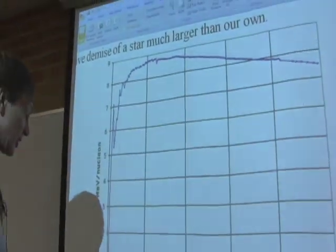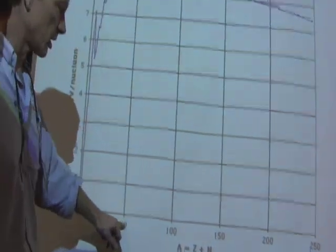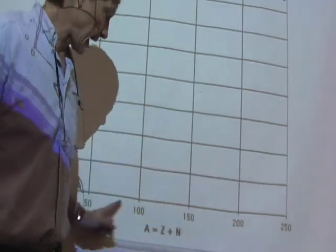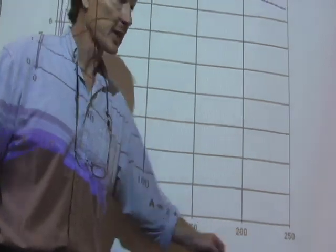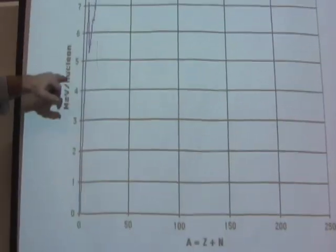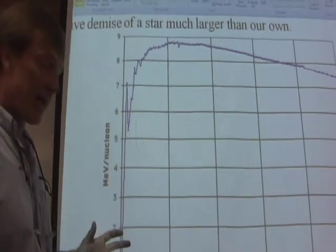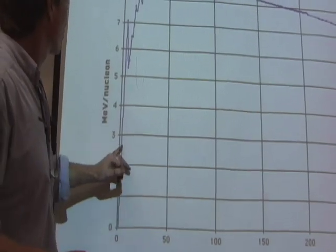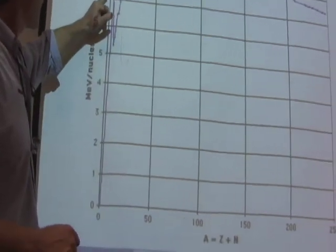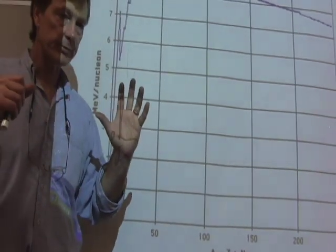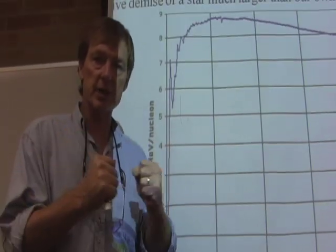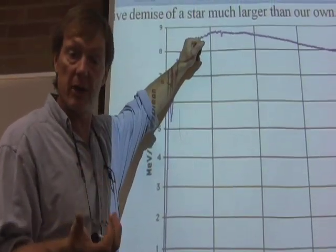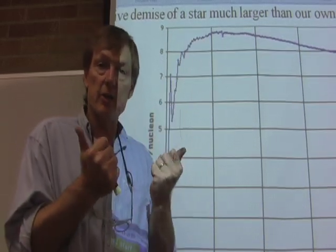But this is the nucleon number. We're getting up into bigger elements as we move this way. And this is called the binding energy, energy per nucleon. What happens is, if I go from a proton, there's one, and as I fuse objects together, moving in this direction, I'm fusing objects together to make bigger elements.